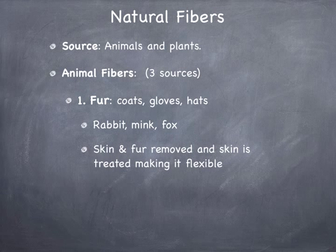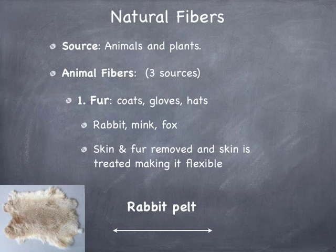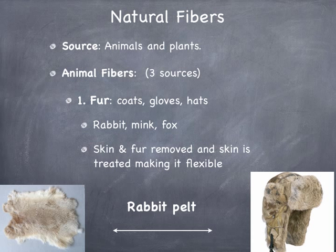When they collect the fur to use for an article of clothing, they actually take the skin and the fur together — they skin the rabbit, mink, or fox. They treat the skin to make it more flexible so they can mold it into the material they want to make. You can see in the pictures here that's the rabbit pelt — they've taken the skin and fur off the rabbit and use that to make a hat. That's actually a hat I saw on a student today.